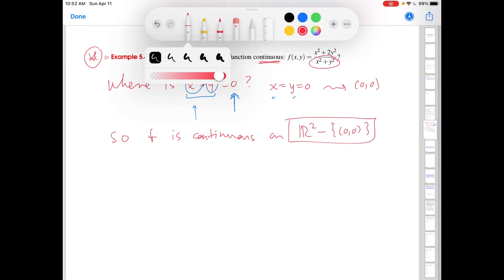So f is continuous on the entire plane minus the point (0,0). So that's our conclusion. And then I'm going to add in here, example 5.5.